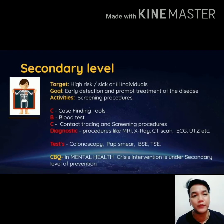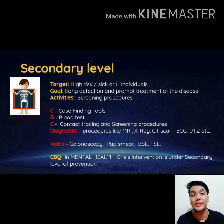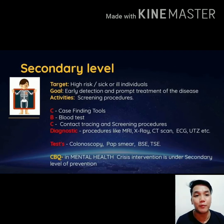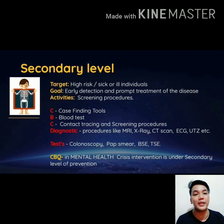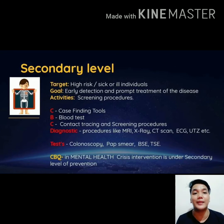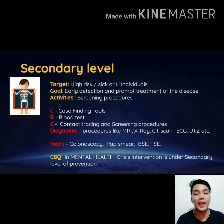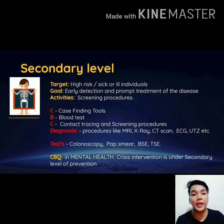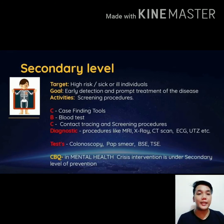The mnemonic for secondary level of prevention activities is CBC. C stands for case finding tools — such as sputum exam for TB, plotting weight for malnutrition, tourniquet test for hemorrhagic diseases, and skin biopsy or skin smear for leprosy. B stands for any form of blood test — CBC, Western blot, ELISA. C also includes contact tracing, case finding, and crisis intervention.